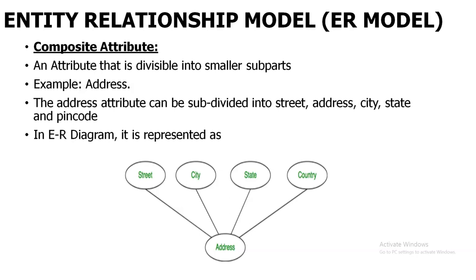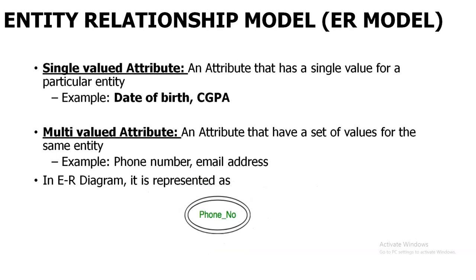For example, for the entity student, the address of a student will be a composite attribute. Composite attribute is nothing but an attribute that can be divided into multiple values. The next one is single valued attribute. For example, date of birth — for one student, date of birth is going to be one single value. Also, CGPA is going to be one single value. CGPA may be different from each semester, but the value will be only one value for one semester. That is your single valued attribute.